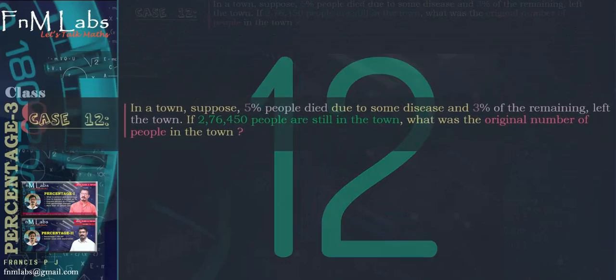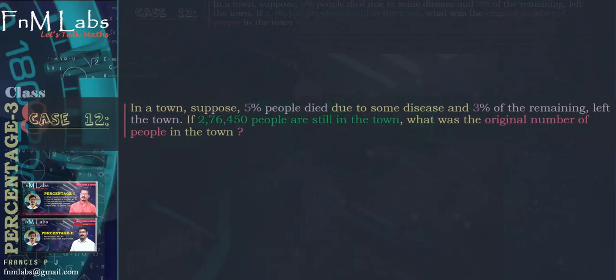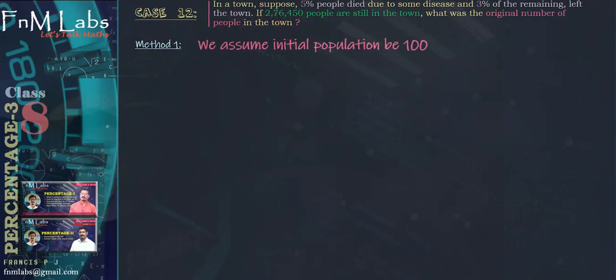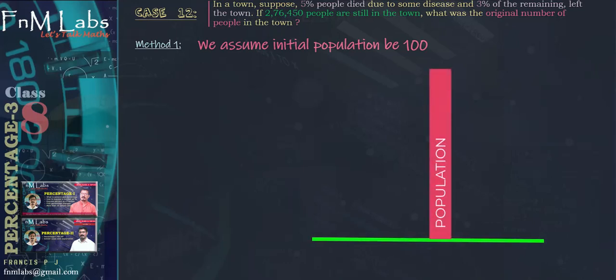Next, case 12. In a town, suppose 5% of people died due to some disease and 3% of the remaining left the town. If 276,450 people are still in the town, what was the original number of people in the town? We solve this using two methods. In the first method, we assume the initial population as 100. Let us visualize the scenario. We represent the population using a vertical bar, the height denoting 100%, that is, the total population.